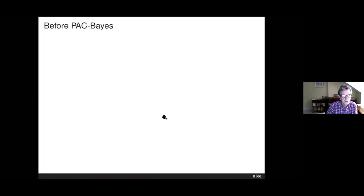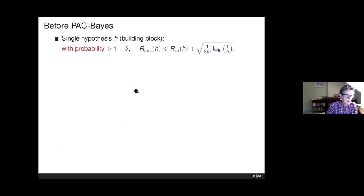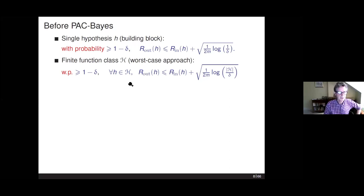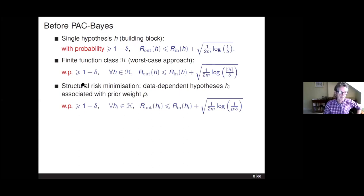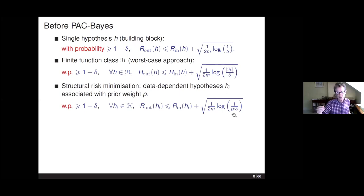For a single hypothesis, applying Hoeffding's inequality gives a basic bound. If you do a union bound over a finite function class, you get something similarly simple. You can do something more subtle by putting weights — prior weights — on a finite or even countably infinite set of hypotheses. Then you get a bound with a function-dependent term: log(1/π), where π is the prior probability assigned. This starts to give a feel for the direction toward PAC-Bayes analysis, which involves a prior and posterior distribution.